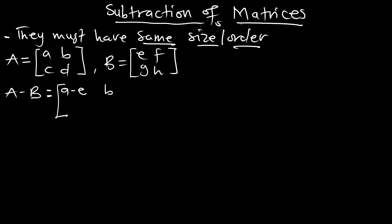Continuing the operation: B minus F, C minus G, and D minus H. So this is the complete operation for A minus B. Let's see if we are going to get the same answer for B minus A.